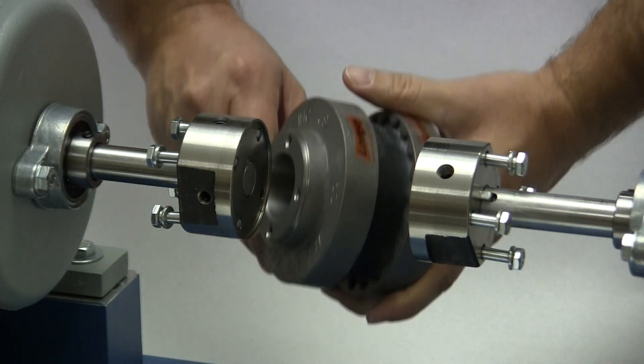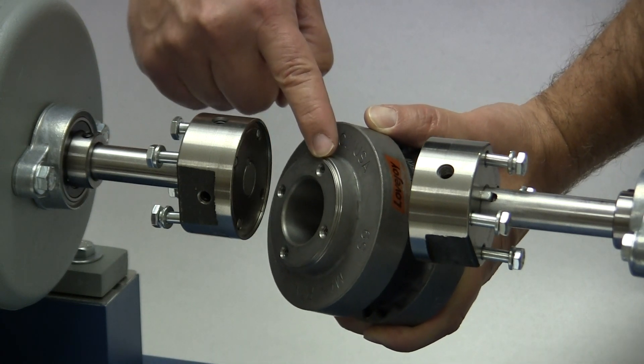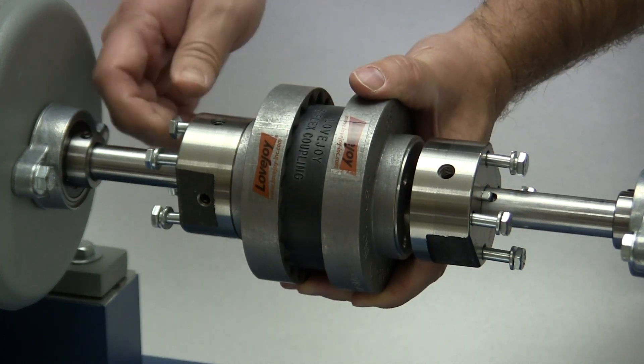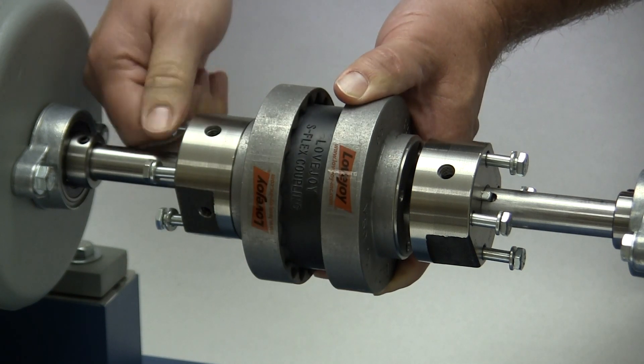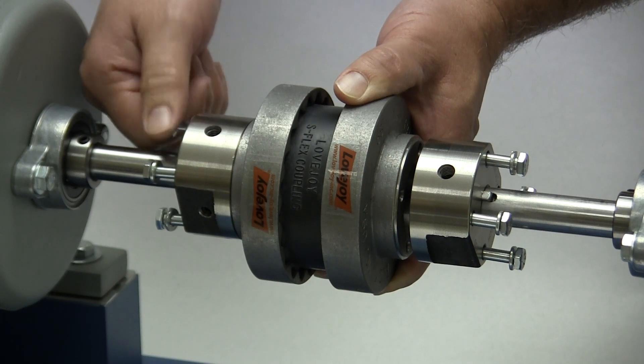Lift the center sub-assembly into place between the two spacer hubs. The pilot on the spacer flange should seat easily into the pilot recess in the spacer hub. Rotate the sub-assembly until the holes in the flange line up with the holes and bolts in the spacer hub. Start threading the spacer bolts into the flange and hand tighten.